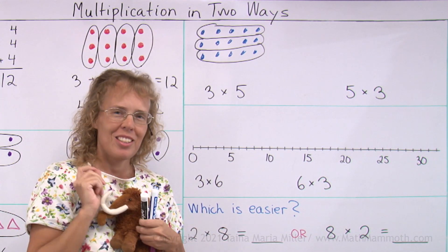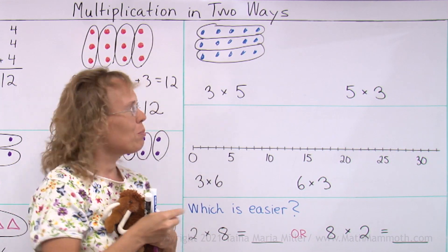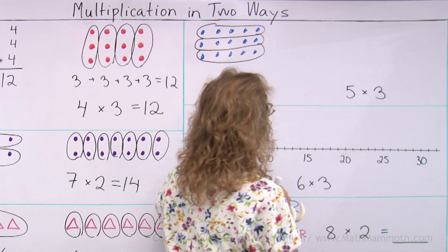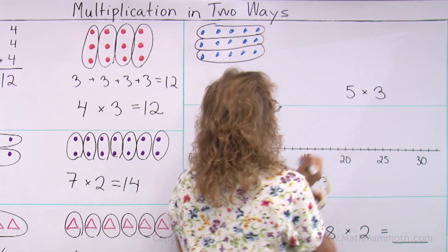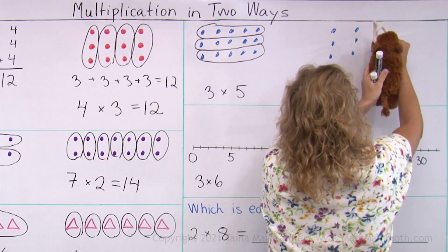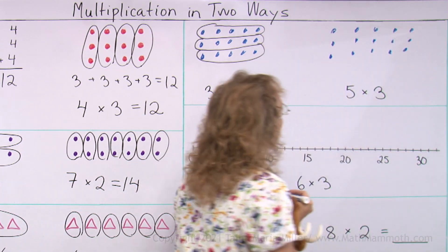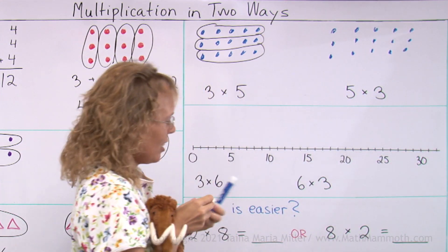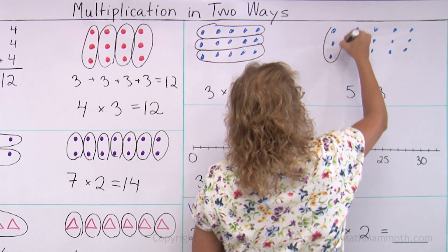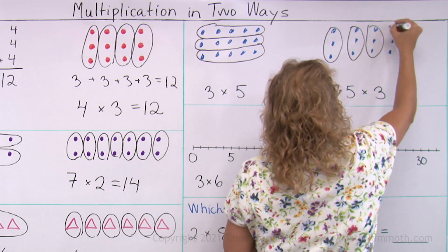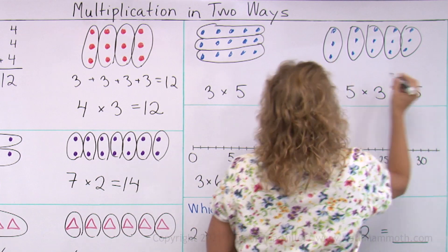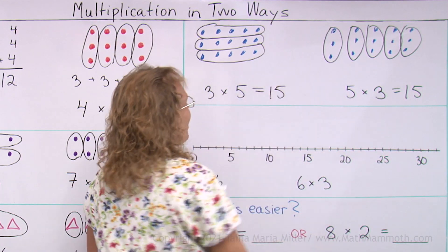Can you see how it should be drawn? We need to draw five groups of three. Let's draw the groups too — these are groups of three and there are five of them. But either way the answer is fifteen.